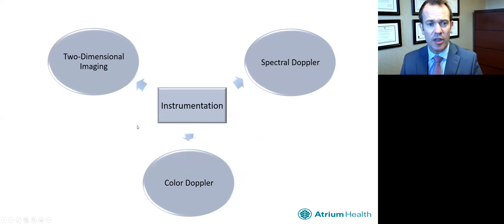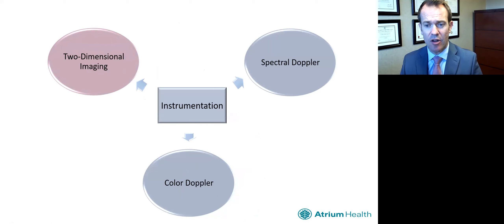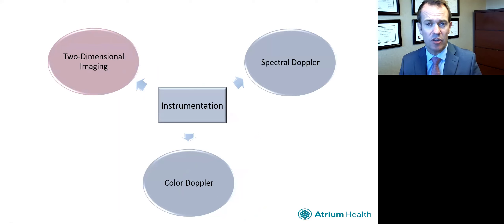Beginning with instrumentation, we'll start by talking about two-dimensional imaging. It is important that operators doing transthoracic echoes should be familiar with the settings that contribute to the quality of the overall image. Some of these settings are fixed and can't be altered, but many of them are not, and they can dramatically improve the image quality.